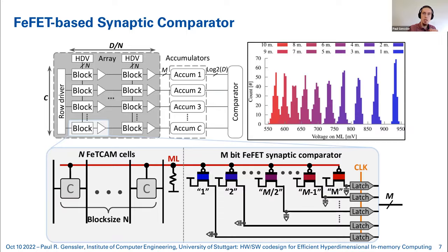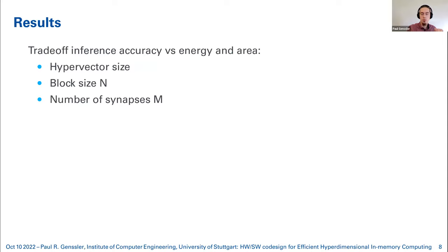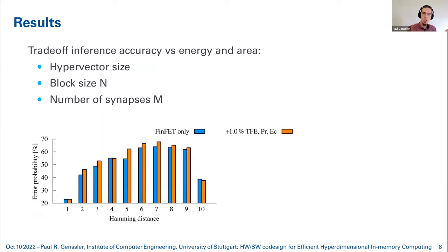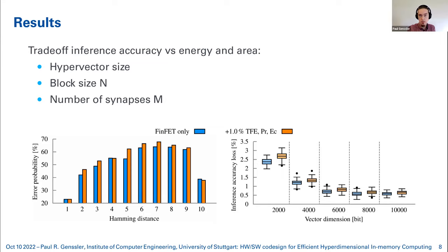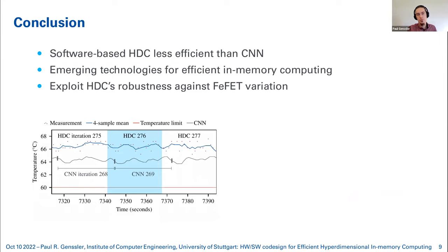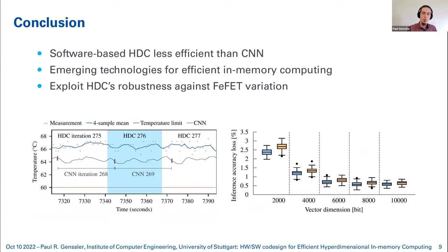Despite error probability of 60–70% due to process variation from transistors and the ferroelectric layer, inference accuracy loss is rather small — only about 0.5% (less than one percent) for larger dimensions. In conclusion, software-based HDC can be less efficient and generate more heat than a CNN, motivating the use of emerging non-volatile memory technologies for efficient in-memory HDC. The inherent robustness of HDC against noise and errors is exploited to overcome device-level process variation.